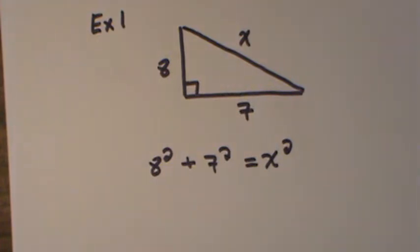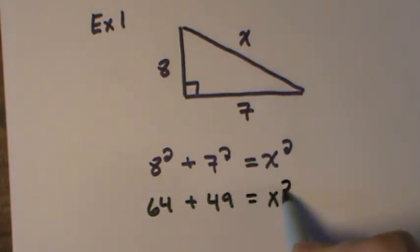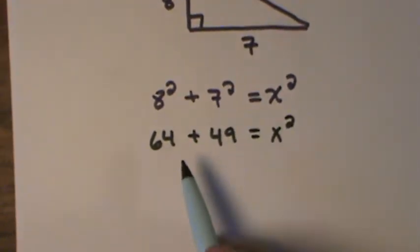As I square those values, 8² is 64, 7² is 49, equal to X². If I add that together, that's 113.